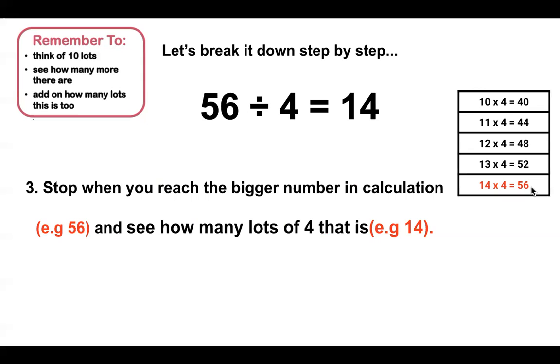I stopped when I reached 56 because that is the bigger number in my calculation, and that will show me how many lots of 4 that is. In the table, I can see that there are 14 lots of 4 that equal 56. That would make my answer for 56 divided by 4, 14.